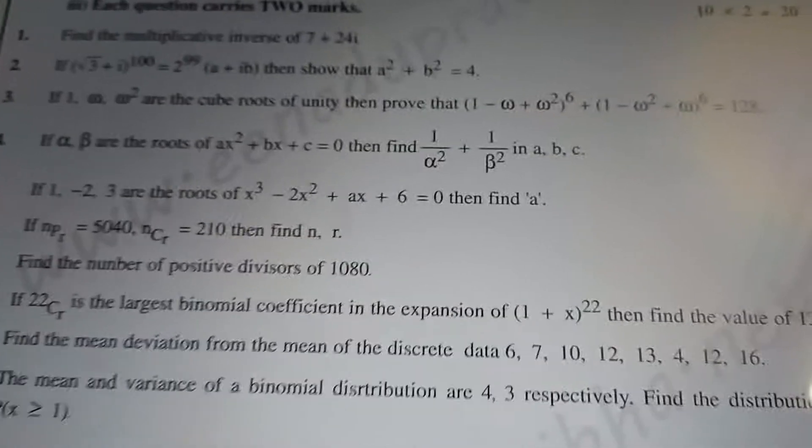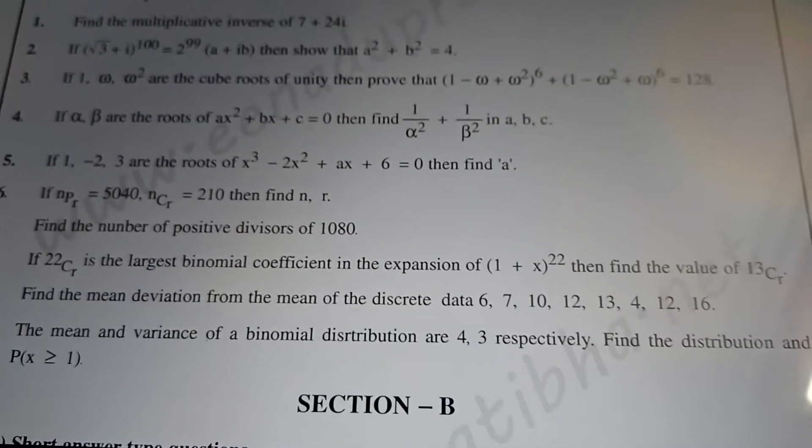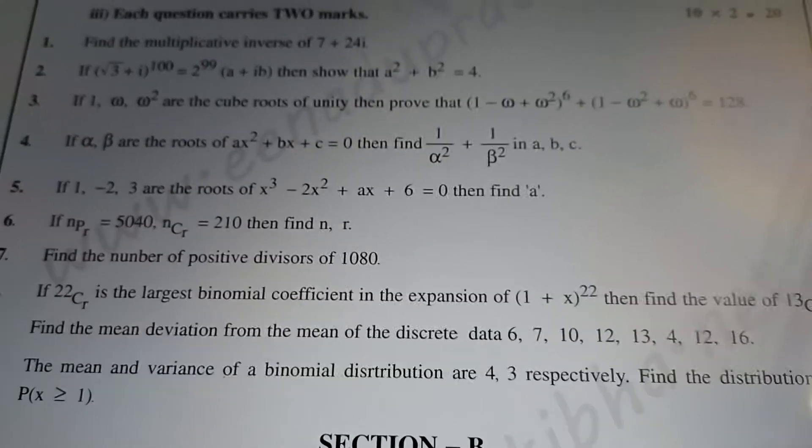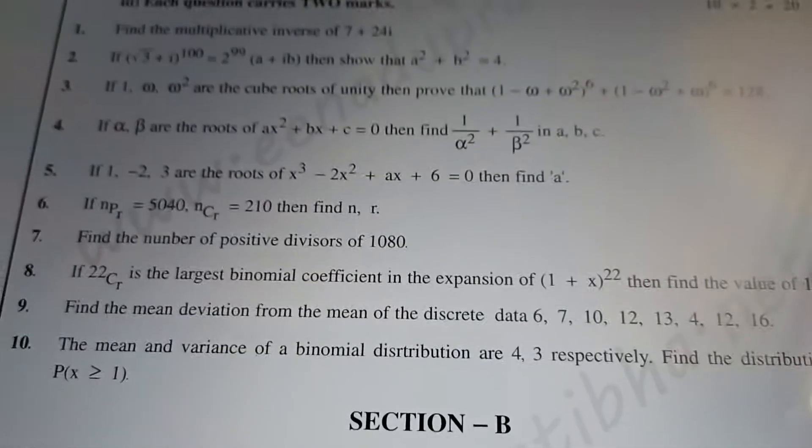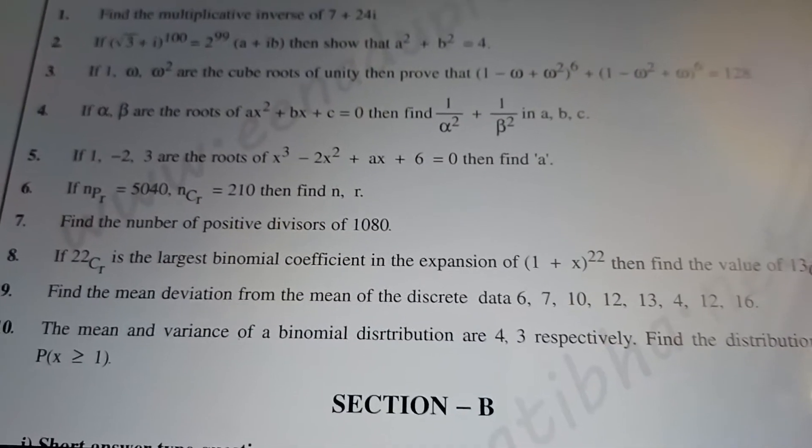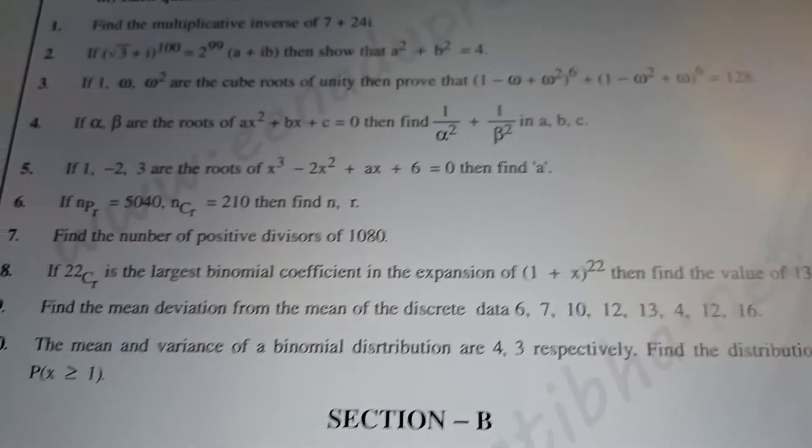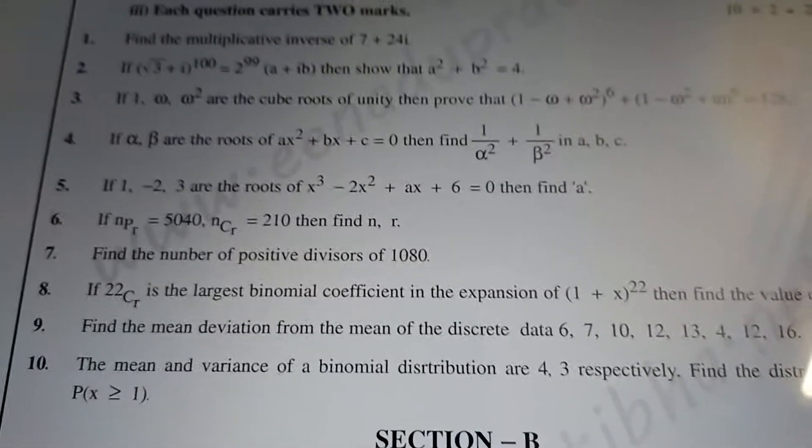First, you will have R minus 1 and next you will have 13CR and then find out CR. Find the mean deviation about the mean. Discrete data is given. Next, mean and variance of a binomial distribution are 4 and 3 respectively. Then find the distribution of P is X greater than or equal to 1.